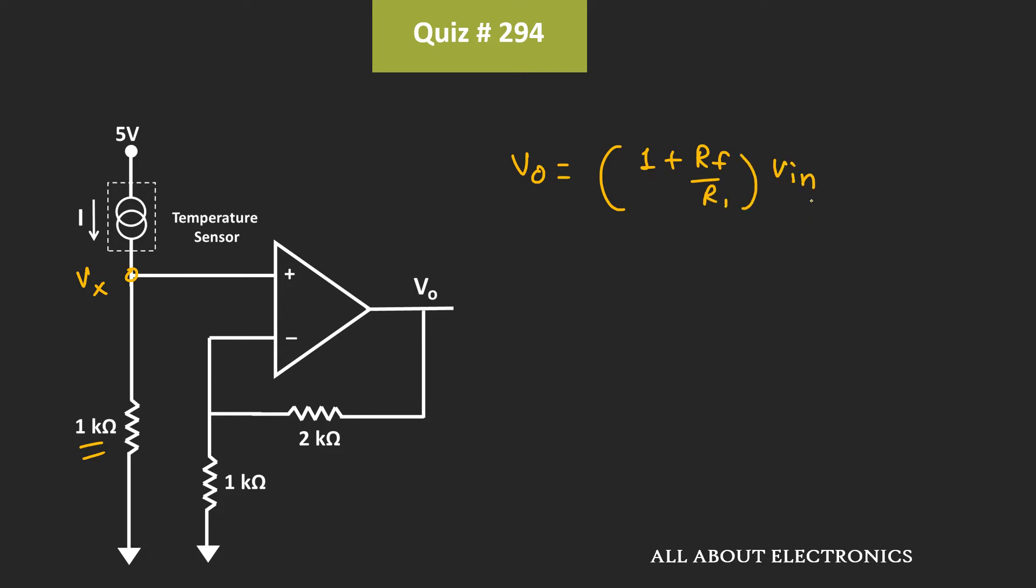Where here, this input voltage is the voltage which is applied at the non-inverting terminal. So, in this case, it is equal to 1 plus Rf divided by R1 times Vx.